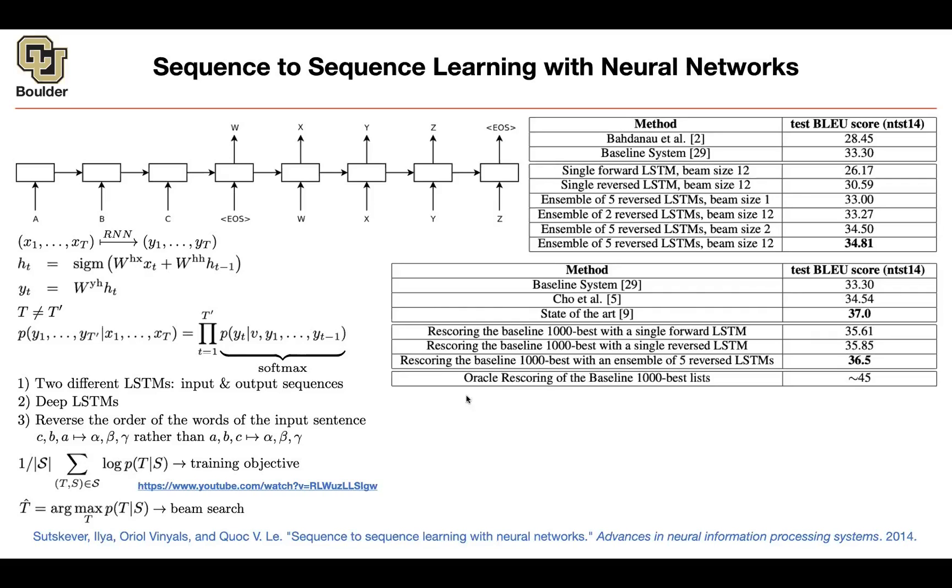And don't worry about this oracle. This oracle is if the baseline system is proposing 1,000 translations, and then you have a human to order them, this is the best number that you are going to get out of test score. This is the maximum. So there is still a lot of room for improvement. And for neural networks, it's very hard for them to beat usual machine learning.